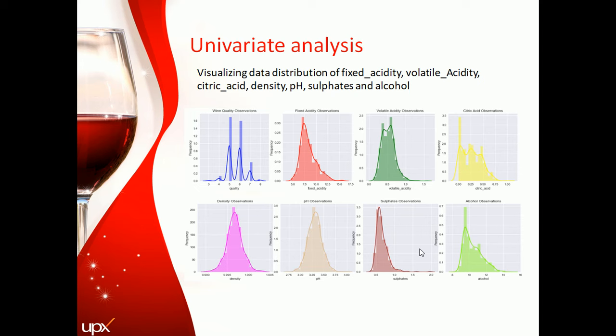Now univariate analysis. Here you can see lots of graphs for factors like fixed acidity, volatile acidity, citric acid, density, pH, sulfate, and alcohol. The majority of samples are average quality, with a few having high quality and a few still having poor quality.